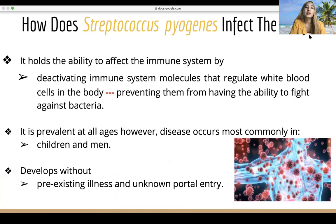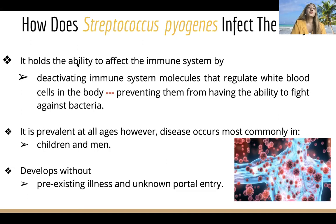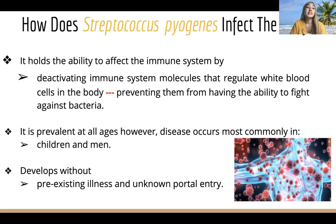So how does Streptococcus affect the body? Streptococcus affects the body by having the ability to strike the immune system — deactivating immune system molecules that regulate white blood cells, preventing them from being able to fight against the bacteria.